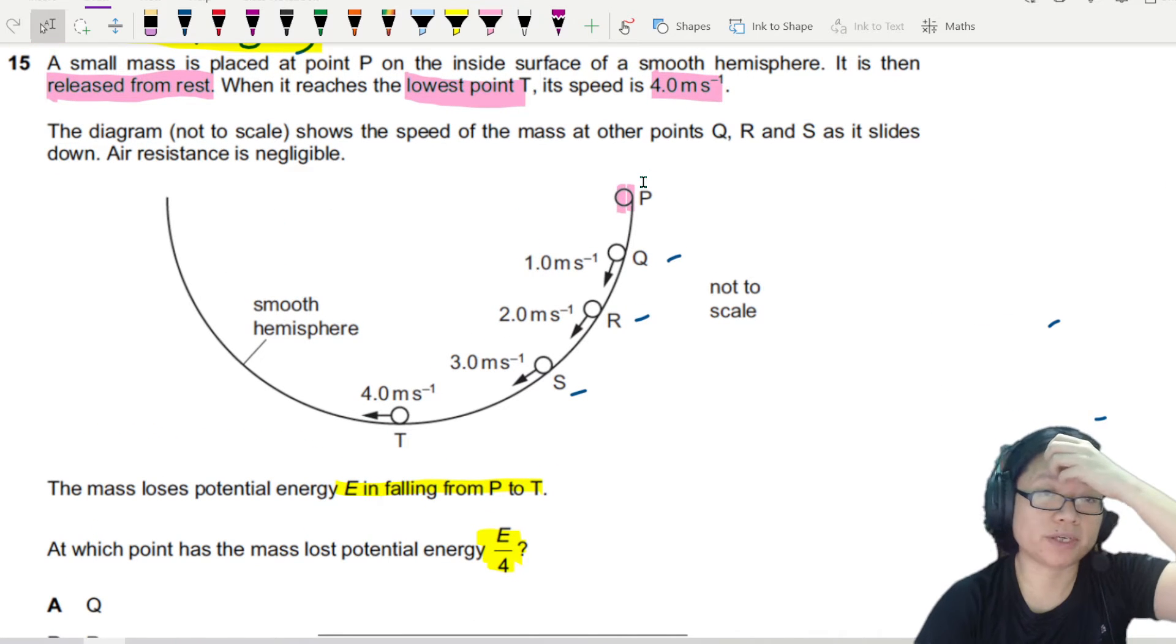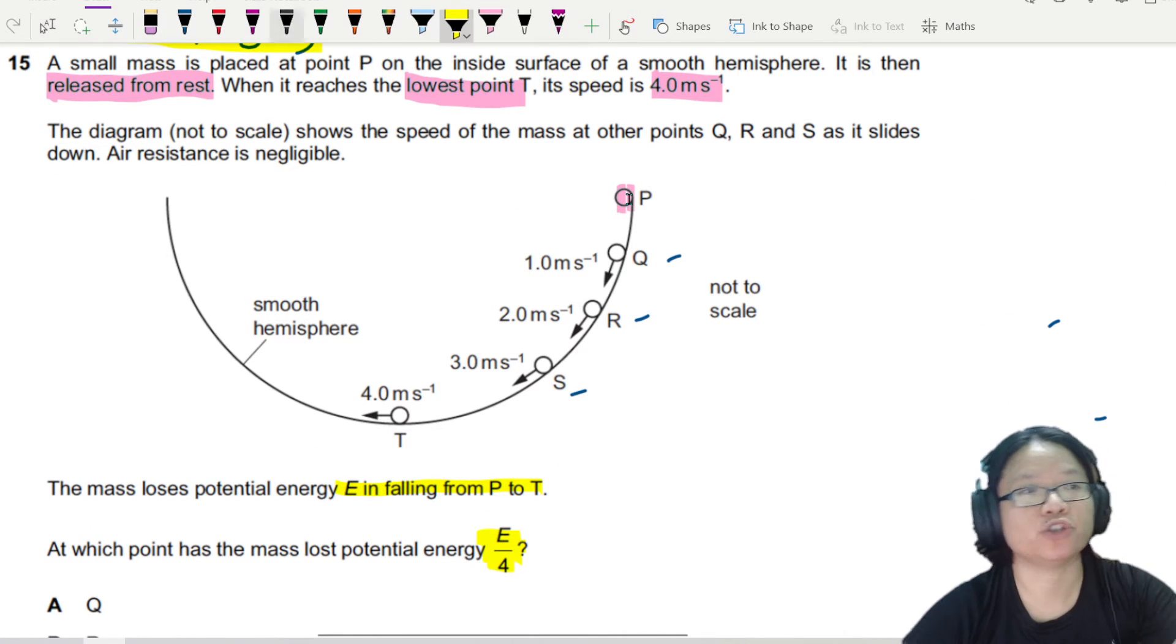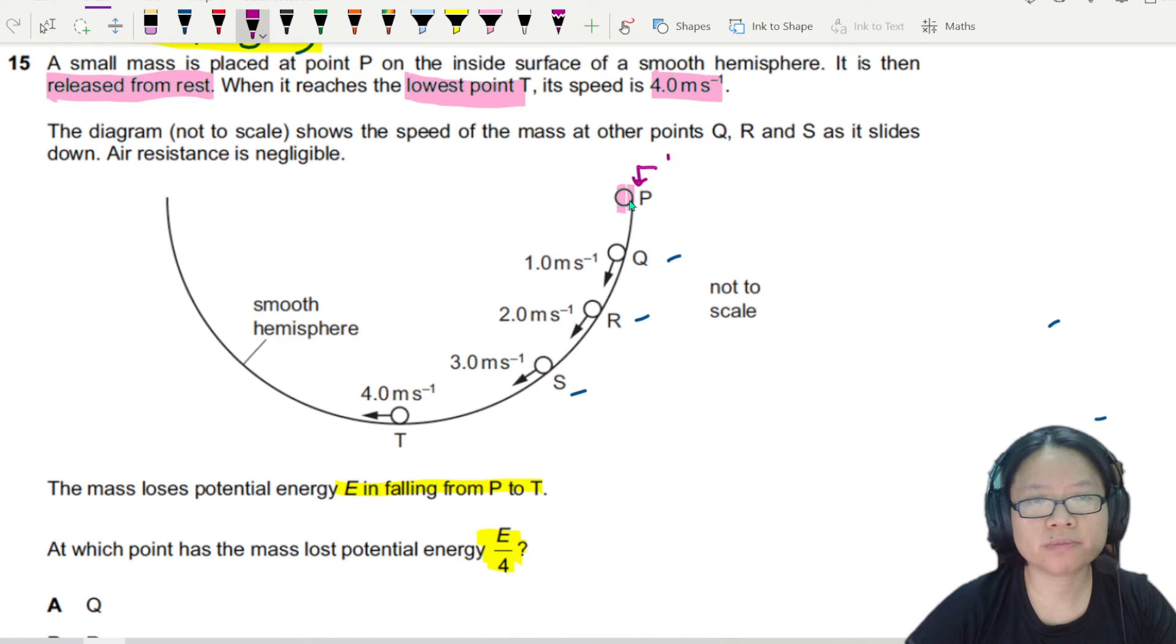We start off our ball from here. And the kinetic energy is 0. So at this point, KE is 0. And of course, we can find the KE at T in terms of M. So I'm going to let M be the mass of the ball. Alright. So if you think about this, when we travel from P to T...